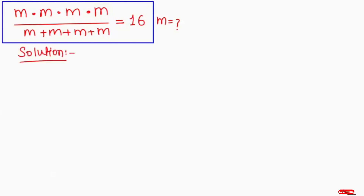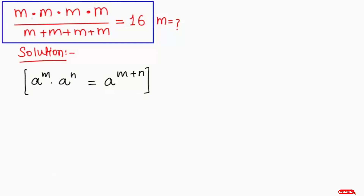The first step is to apply the exponential rule: a to the power of m times a to the power of m can be written as a to the power of m plus m. Here each m has power one, so we add the powers because of the same base. This equation turns to m to the power of 4 over 4m, which equals 16.